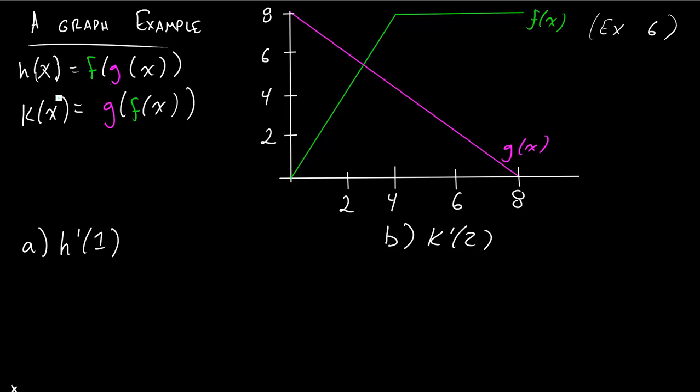So h of x is f of g of x, k of x is the opposite, it's g of f of x, and it's going to ask us to find a derivative of h at 1 and a derivative of k at 2.